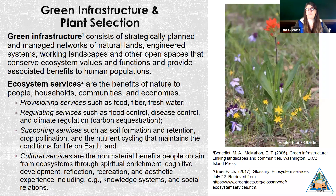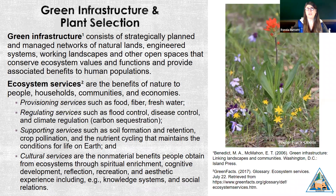Ecosystem services are the benefits of nature to people, households, communities, and economies. They can be subdivided into four categories: provisioning services such as food, fiber, and fresh water; regulating services such as flood control, disease control, and climate regulation; supporting services such as soil formation and retention, crop pollination, and nutrient cycling; and cultural services such as spiritual enrichment, cognitive development, reflection, recreation, and aesthetic experiences including knowledge systems and social relations.